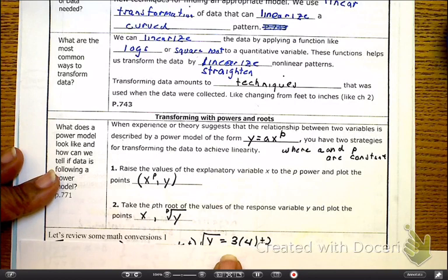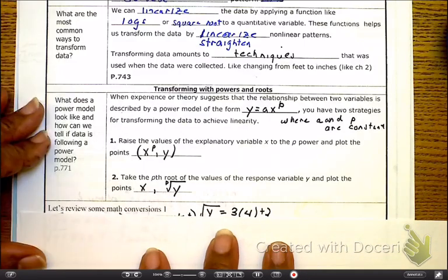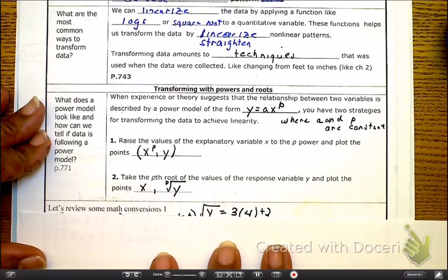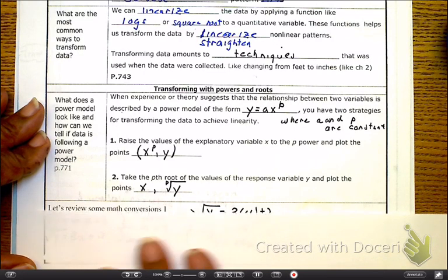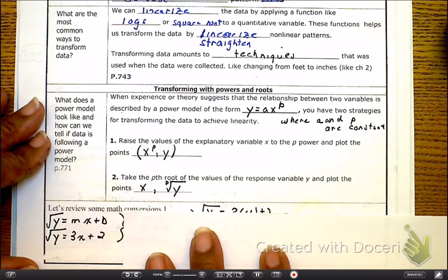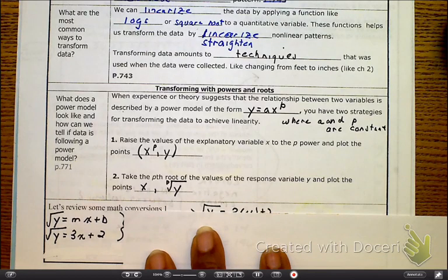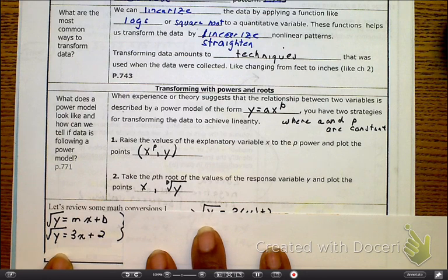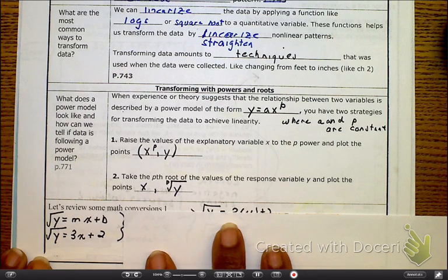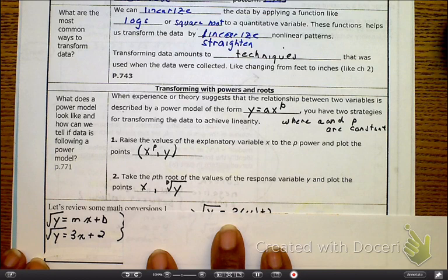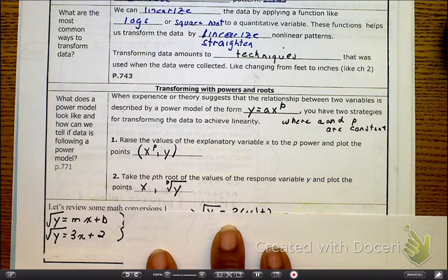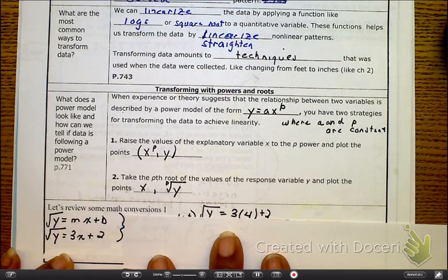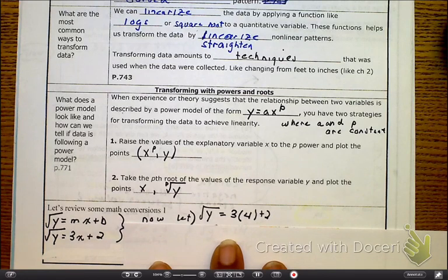I just want to show you how the problem would look for you. If I'm giving you something like this and you're given a computer printout, which you will be, here are some numbers I randomly came up with. I'm going to linearize this with that square root and then say, make a prediction. Let's predict when x is 4. Remember, we're in total math mode right now.